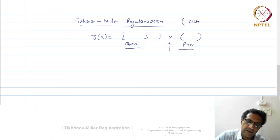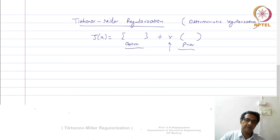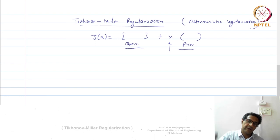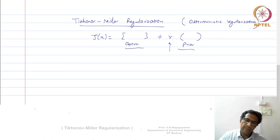This trade-off between how much of the observation and how much of the prior you use — the relative weightage you give to both — in order to arrive at an acceptable x̂ is what is called regularization theory. This is Tikhonov-Miller regularization, and it comes under deterministic regularization. There is also a way to do stochastic regularization, and under certain conditions these two areas actually meet, but stochastic is more general.